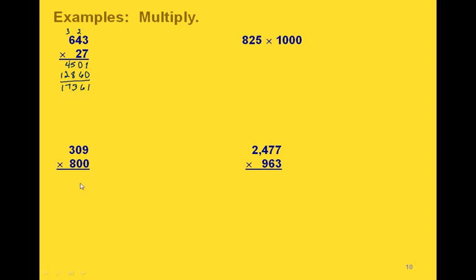Notice that the second number, 800, is just a multiple of 100. As a shortcut, we know our answer will be some multiple of 100. So we can just take 8 times 309 and multiply that answer by 100 — writing two zeros as a placeholder. Then 9 times 8 is 72, carry the 7. 0 times 8 is 0 plus the carried 7 is 7. And 3 times 8 is 24. Our final answer is 247,200.